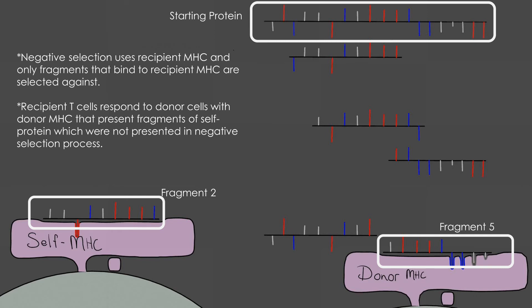Essentially, acute transplant rejection is due to the limitation of negative selection in the thymus. Negative selection for CD8 T cells is based on the six MHC class I molecules expressed by the thymic dendritic cells. When a donor organ contains an MHC which was not used during negative selection, there will be recipient T cells in the periphery which react to fragments of these MHC molecules, even if those fragments come from self-proteins.